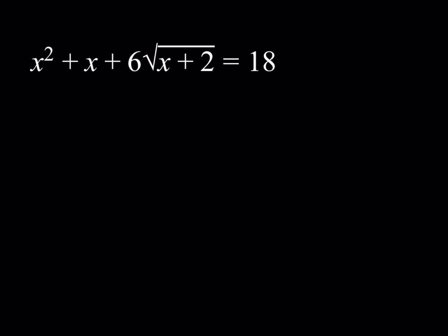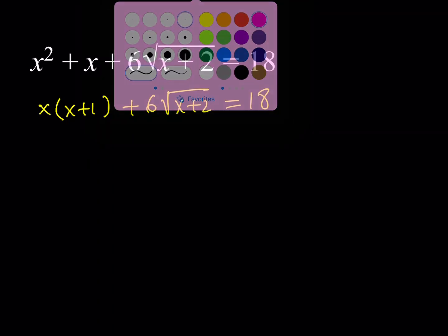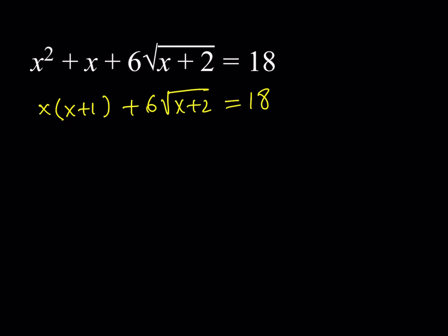So here's how it goes. I'd like to manipulate this equation a little bit first. So I'm going to write this as x times (x+1) plus 6 times the square root of x+2, and that's equal to 18. So I'd like to use substitution. For that purpose, I'm going to call this u. So √(x+2) equals u. And let's write down what it means. This means that, first of all, u is greater than or equal to 0, right? That's required. And then I can square both sides and get x+2 is equal to u², and x is equal to u² - 2.